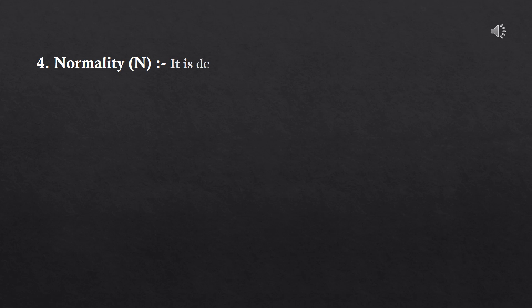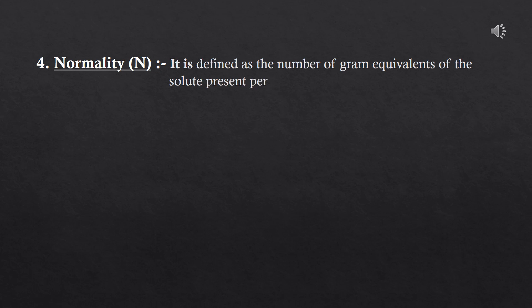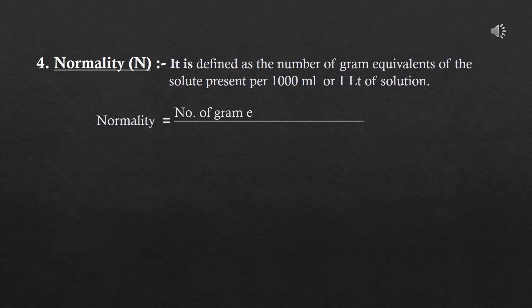The fourth concentration term is normality, denoted by N. It is defined as the number of gram equivalents of solute present per litre (or 1000 ml) of solution. Normality = (gram equivalents of solute / volume of solution in ml) × 1000. If volume is given in litres, do not multiply by 1000.